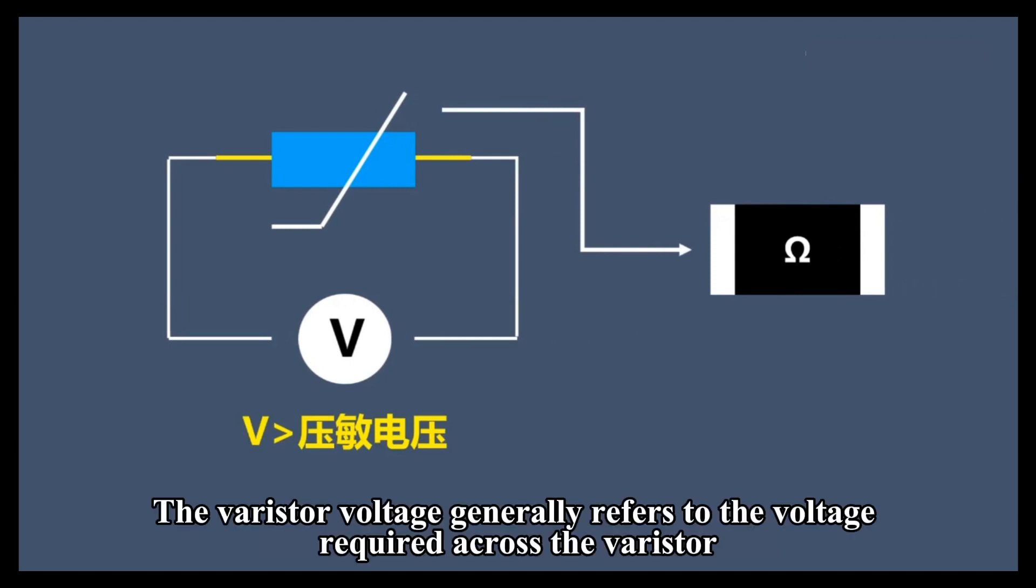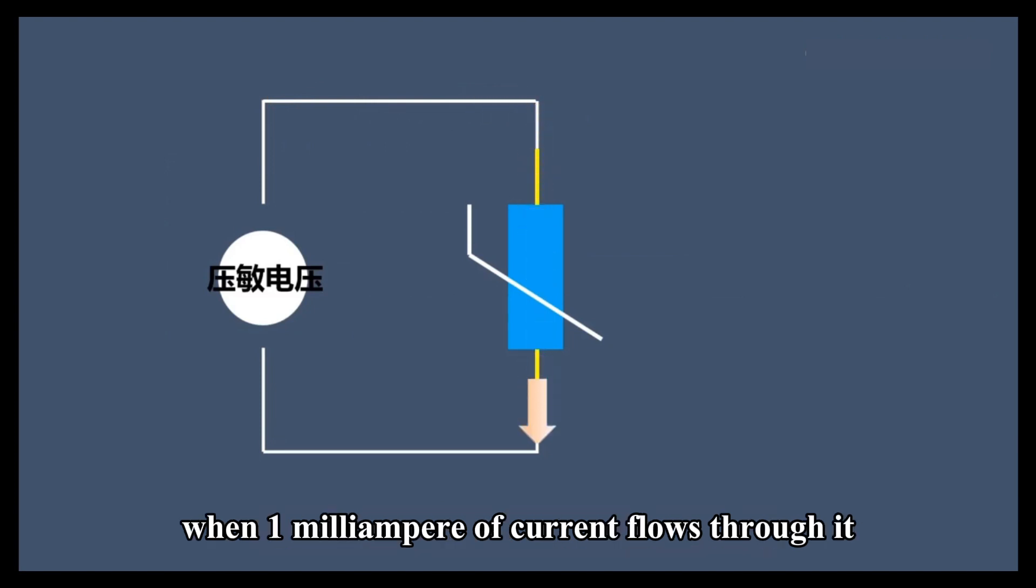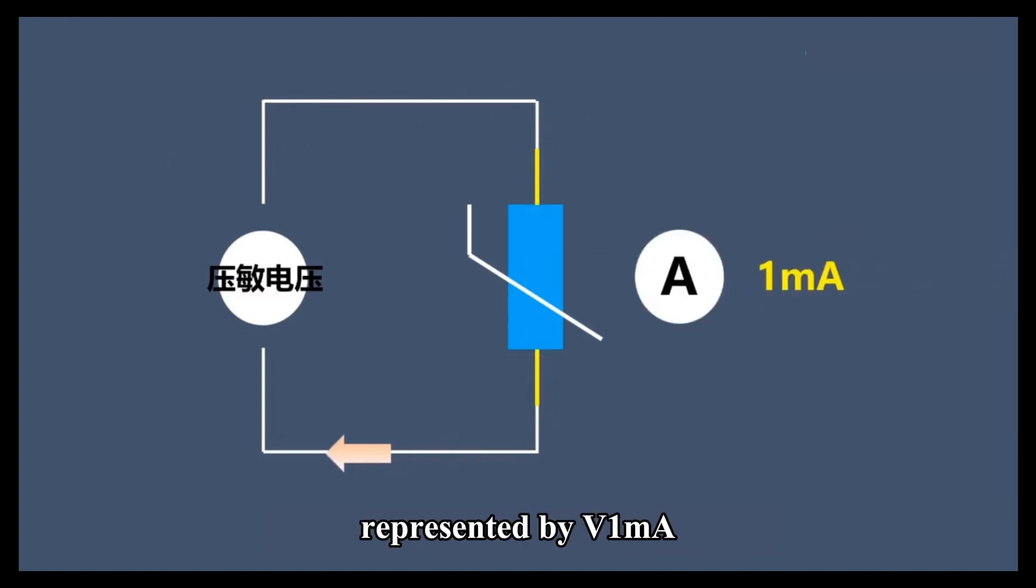The varistor voltage generally refers to the voltage required across the varistor when 1 mA of current flows through it, represented by V1ma.